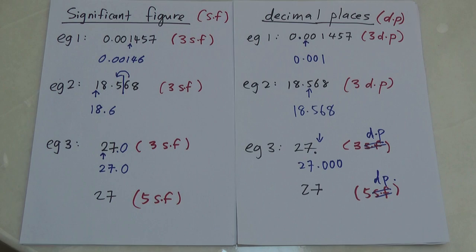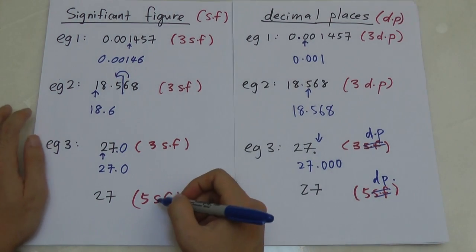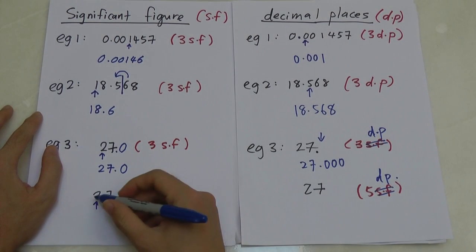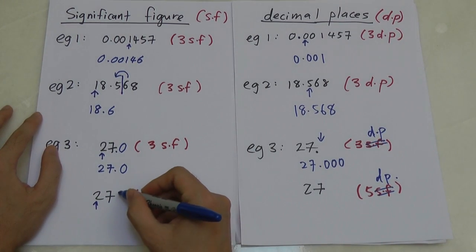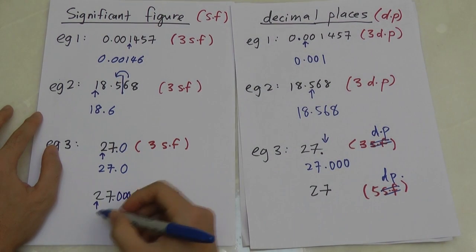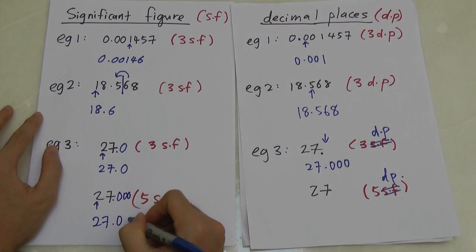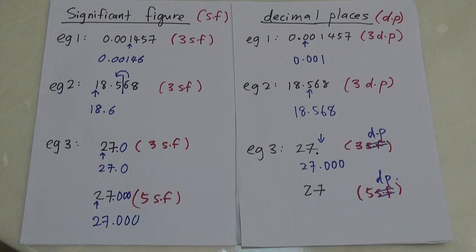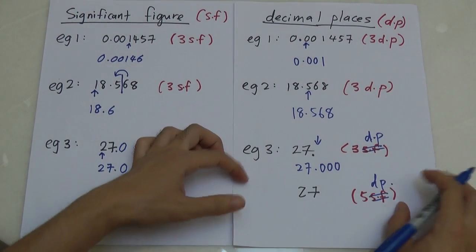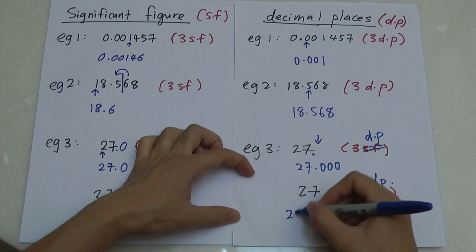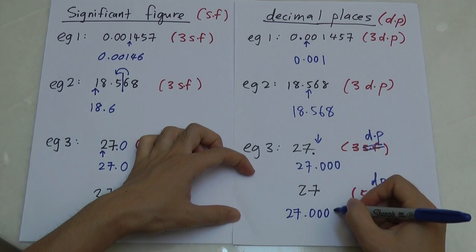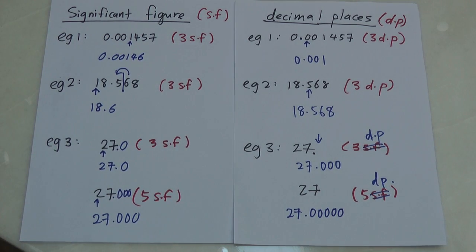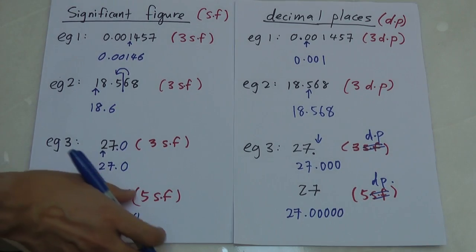For five significant figures on the number 27, we count 2 as first and 7 as second, then add three more zeros after the dot, giving 27.000 — that's five significant figures. For five decimal places, after the dot you simply add five zeros.